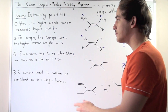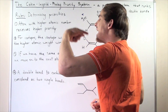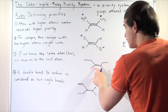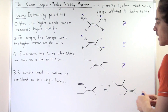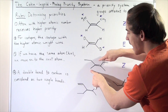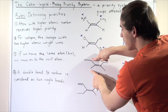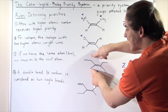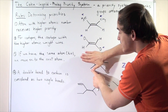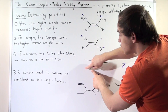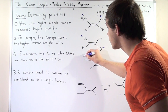Rule number three: if we have a tie between our atoms, we move to the next atom. For example, with a carbon-carbon double bond, examining the first carbon, it is attached to a carbon on one side and a carbon on the other — so we have a tie and can't determine priority yet. Moving to the next atom, one side has no further atom, but the other side has another carbon atom. That side wins because it has a higher atomic number, giving it a higher priority.